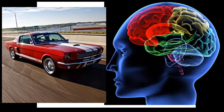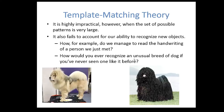However, because template matching theory relies on our memory storing an image of everything we've ever seen before, it seems kind of impractical. The set of possible patterns we've seen is very, very large. It also fails to account for our ability to recognize brand new objects we've never seen before.